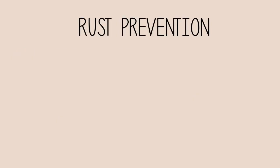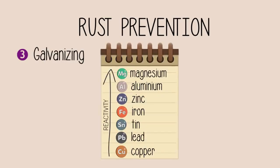Another way to prevent rusting is a sacrificial protection method called galvanizing. Have a look at this reactivity table. Zinc is more reactive than iron. When exposed to oxygen and moisture, zinc will corrode faster than iron.